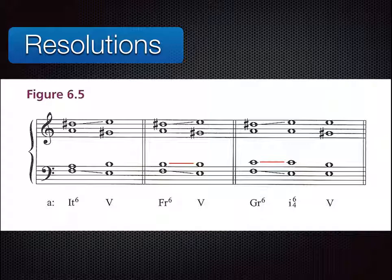In the French six, the added augmented fourth is a common tone to the five chord — in this example, the B is held constant. The German six usually goes to a one-six-four before the five, to avoid parallel fifths. In this example, F and C — a perfect fifth — eventually resolve to E and B, also a perfect fifth. In both the French and German six, the added note (augmented fourth or perfect fifth) is held constant in the next chord, as shown by the red lines.